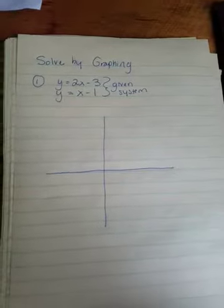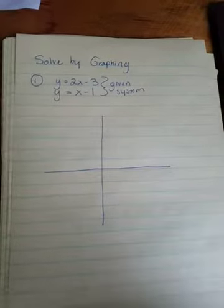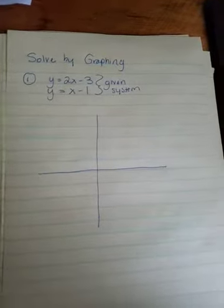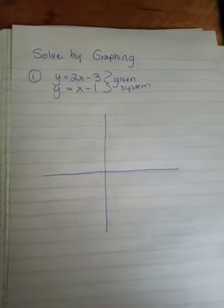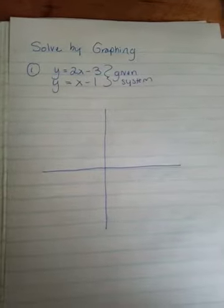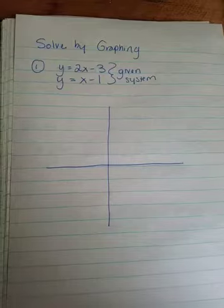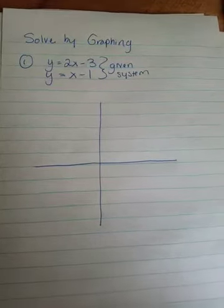So I have an example here for us. Again, we talked about how we're going to look at graphing today. And so the given system, as you can see there that I'm giving you, is y equals 2x minus 3 and y equals x minus 1.